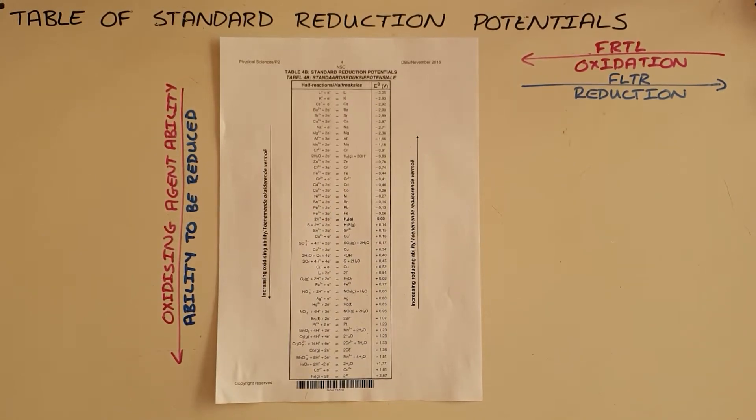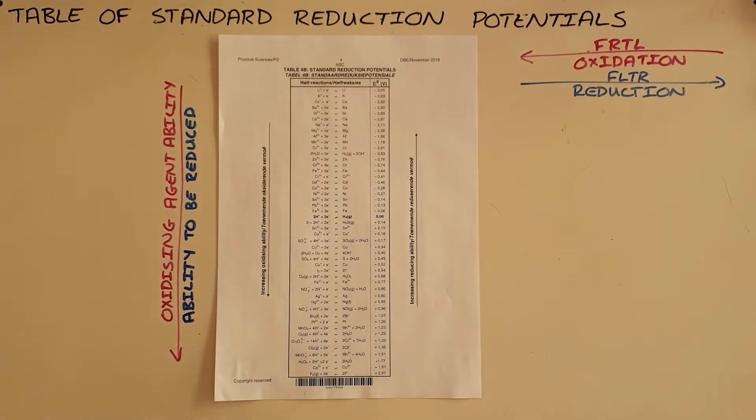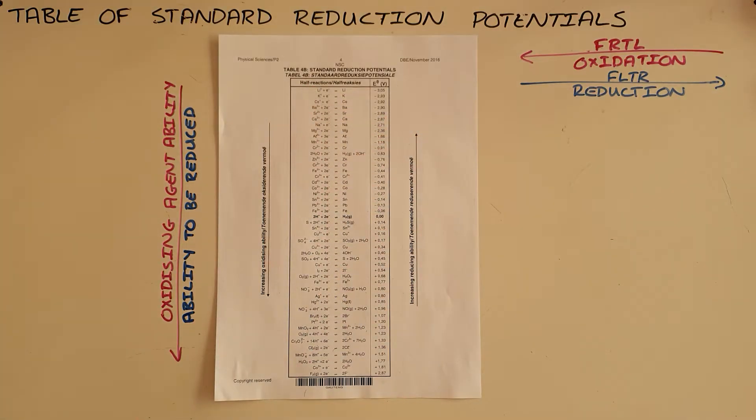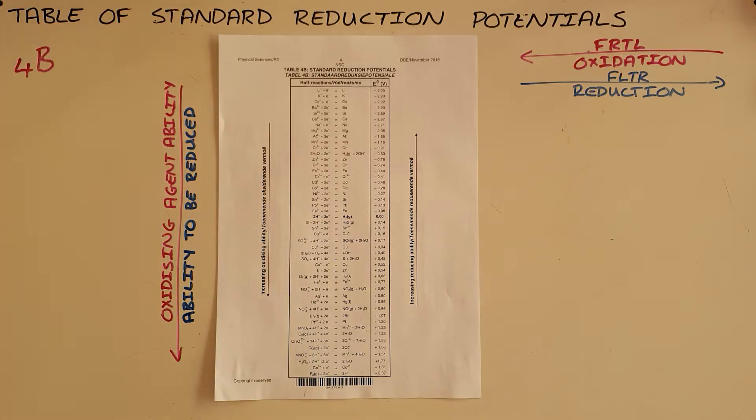The table of standard reduction potentials is a useful tool when evaluating redox reactions. It's important to understand exactly how this table is laid out so that it can be used more effectively. In NSC exams, there are two tables given, table 4A and table 4B. I always encourage people to use table 4B specifically as it makes it easier to determine whether or not a reaction is spontaneous.